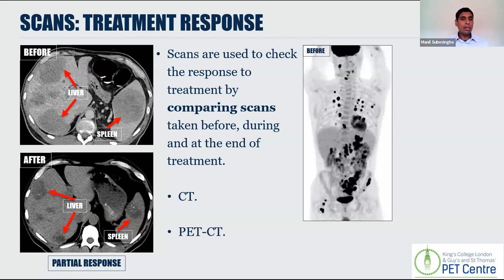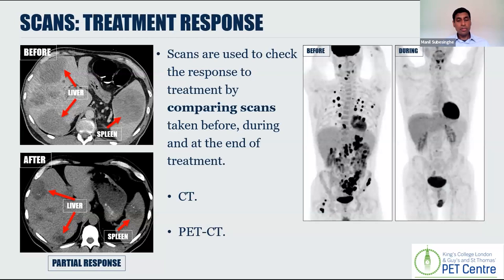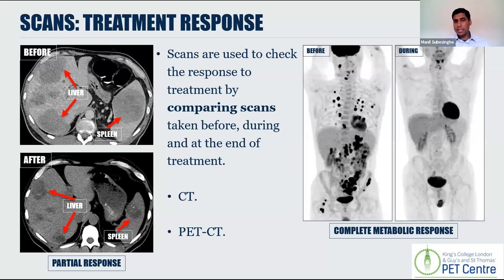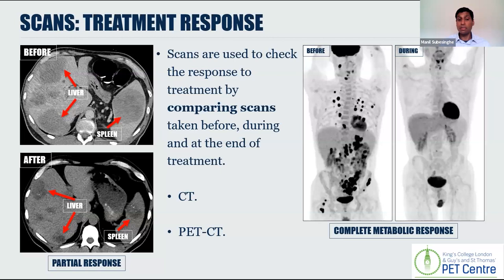We can use PET-CT to assess response. In this person, lymphoma is present throughout the body involving the lungs and bone marrow — stage four disease. During chemotherapy, before the person has even finished treatment, all those sites of lymphoma have melted away. This is what we call a complete metabolic response — really good news. There is a final type of response where treatment hasn't worked and the lymphoma may have actually grown during treatment. This is called disease progression — which means the disease has not responded, but that doesn't necessarily mean there are no other options. We often have many lines of treatment still available in lymphoma.